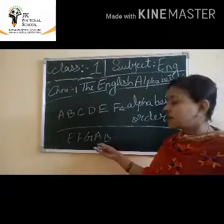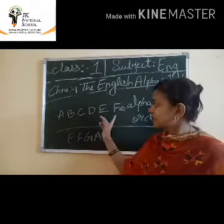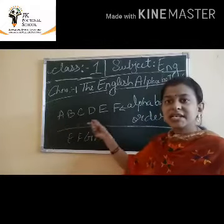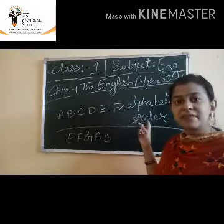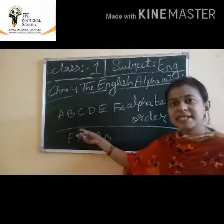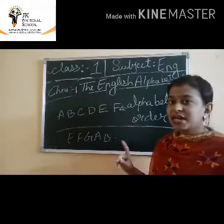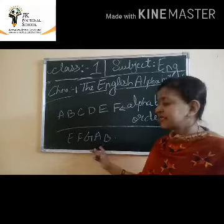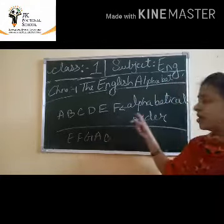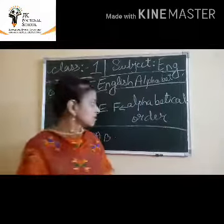The alphabetical order is like this — starting from A: A, B, C, D, E, F — this is known as alphabetical order. Alphabetical order always starts from A and ends at Z. It never starts from any letter other than A. This is the right way of alphabetical order. Understood, my dear students?